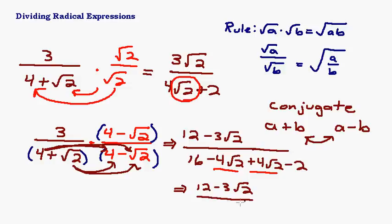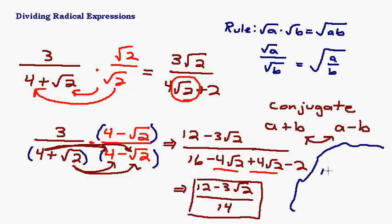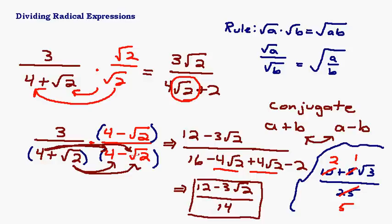So the bottom simplifies to 16 minus 2, which is 14. Can we reduce anything? You could only reduce if a number divides all terms. Some might be tempted to cancel a 2 from 12 and 14, but you can't because there's no number that goes into 12, 3, and 14. So the final answer is 12 minus 3√2 over 14. For example, if you had 10 plus 5√3 over 25, you could cancel a 5 from all three terms — but we don't have that here. That's how you rationalize the denominator when you have a binomial: multiply by the conjugate.